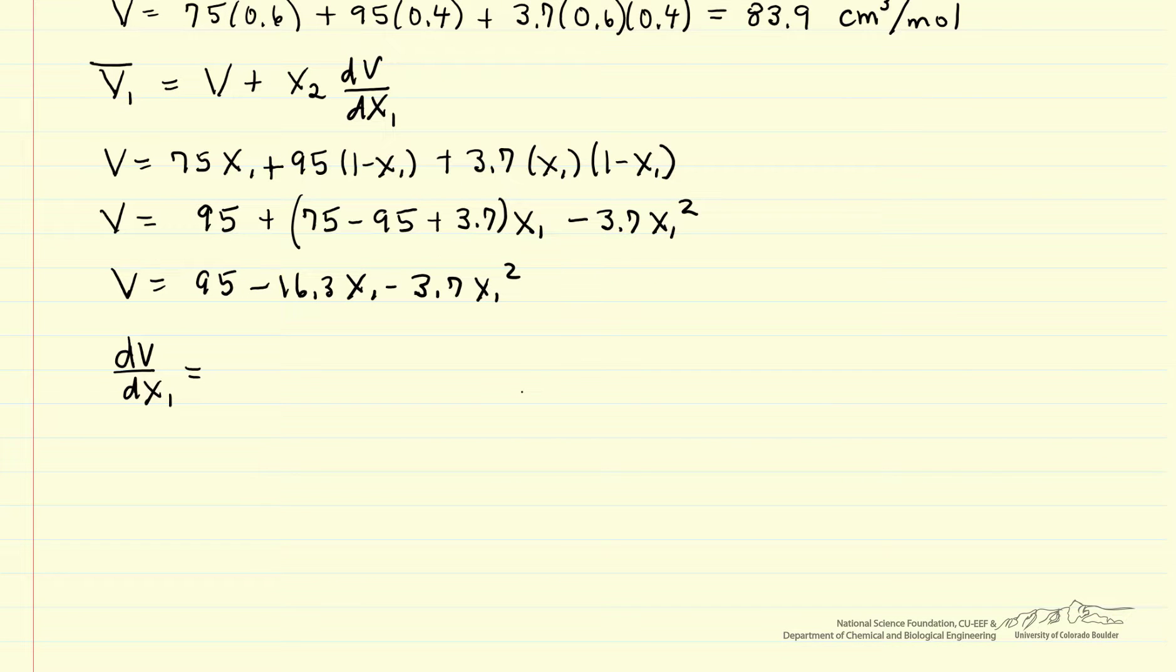We differentiate with respect to x1. First term derivative is 0, second term minus 16.3, third term 3.7 times 2 times x1. We're doing this evaluation at x1 equals 0.6, so I can substitute that number in and calculate the derivative.